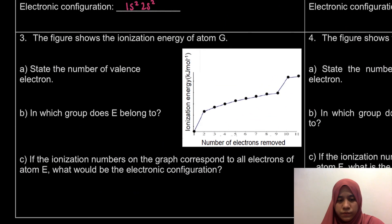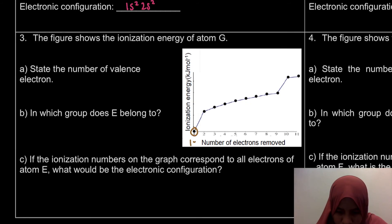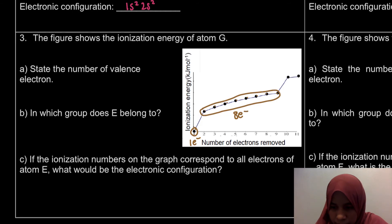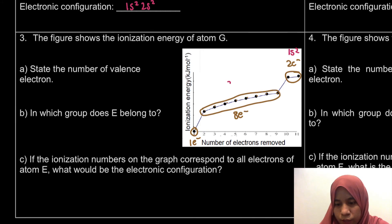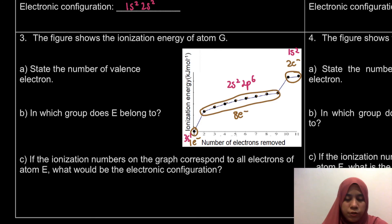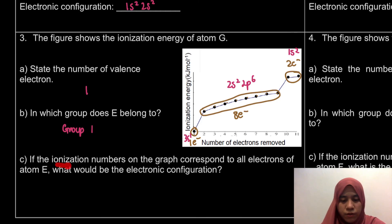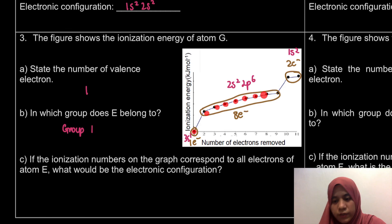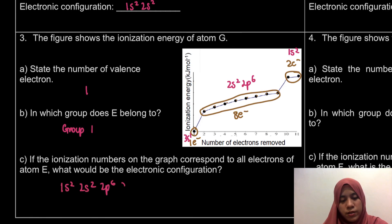For example 3, the figure shows the ionization energy for atom G. We can see 1 electron in the outermost group, then 8 electrons, then 2 electrons at the highest energy. Using shortcut notation: the 2 inner electrons are 1s2, the 8 electrons are 2s2 2p6, and the 1 outer electron is 3s1. The number of valence electrons is 1, so G is in group 1. Since there are 11 total electrons, the electronic configuration is 1s2 2s2 2p6 3s1.